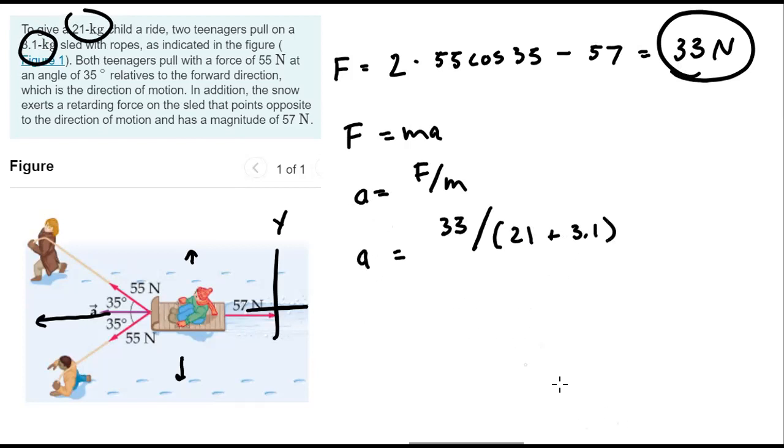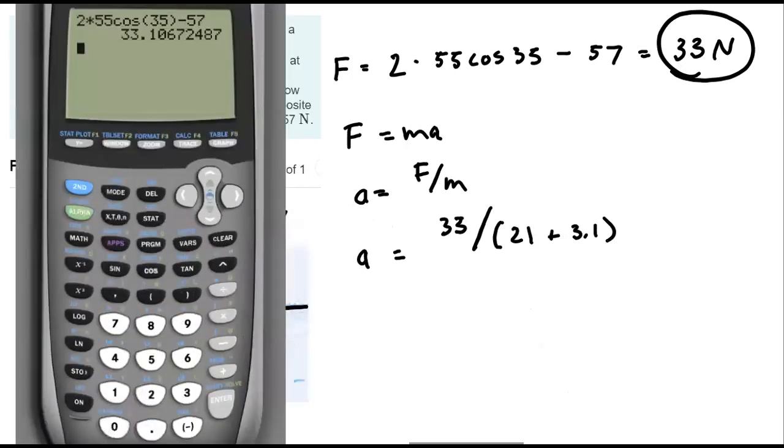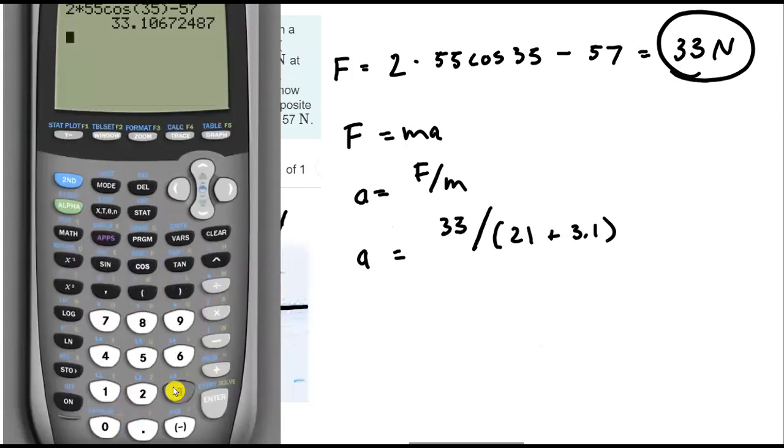So our acceleration calculation is going to be 33 divided by, let's see, 21 plus 3.1. I'll just do 24.1.